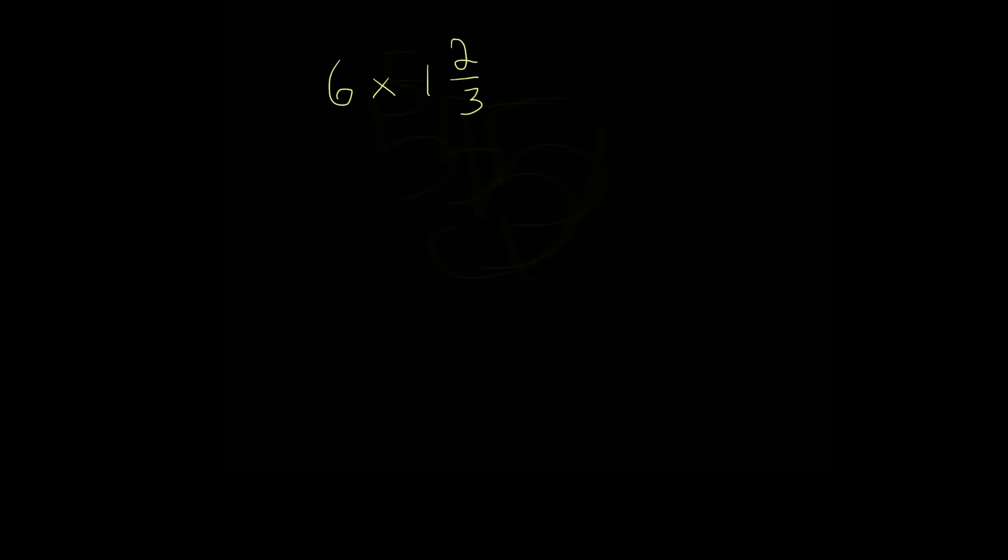So to convert a mixed number into an improper fraction, we want to multiply our denominator here, 3, with our whole number, 1. 3 times 1, that's 3, and then we add it with our numerator, which is 2.